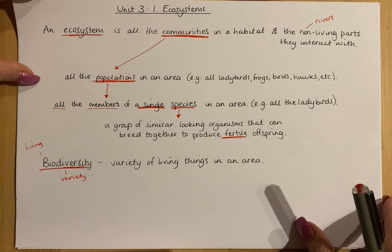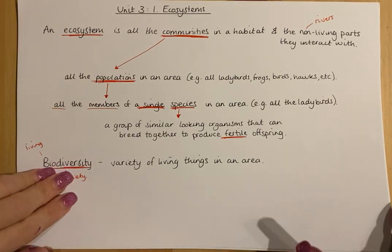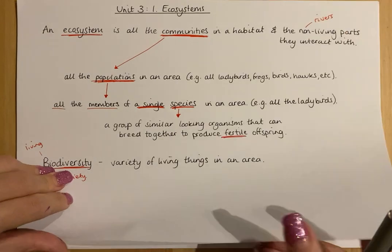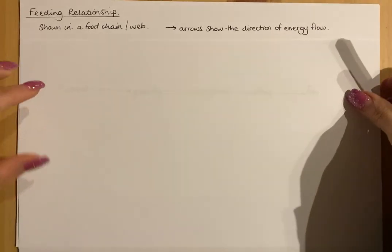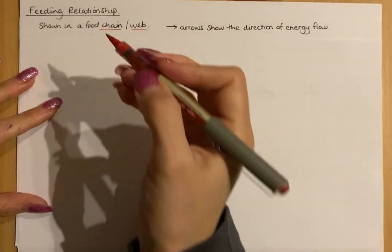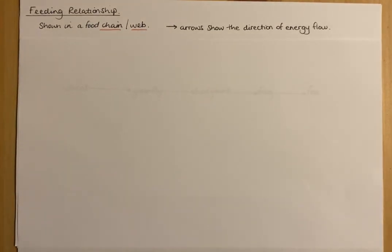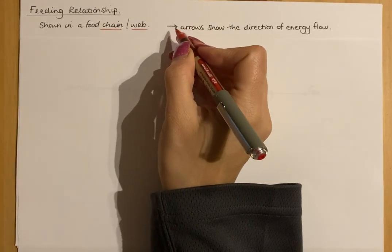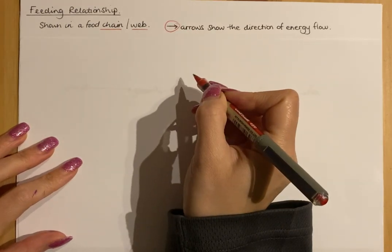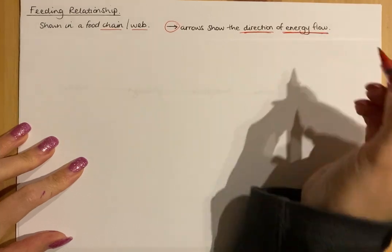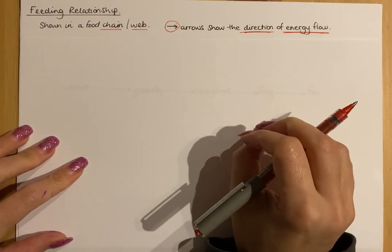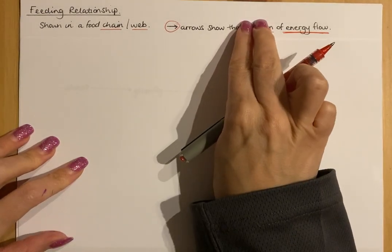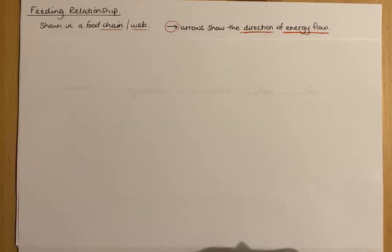Within ecosystems, you'll need to know about feeding relationships between populations and communities. Feeding relationships are shown in either a food chain or a food web. A food chain is a single stream of connected organisms; a food web is multiple interconnected food chains. In each, arrows show the direction of energy flow — and that direction is really important, not just that energy flows.